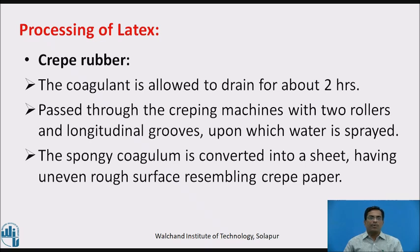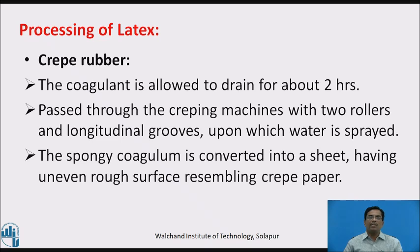We can obtain crepe rubber from the coagulation process. The coagulant is allowed to drain for about two hours, then passed through crepe machines with two rollers having longitudinal grooves, upon which water is continuously spread. This spongy coagulum is converted into a sheet with an uneven rough surface resembling crepe rubber.